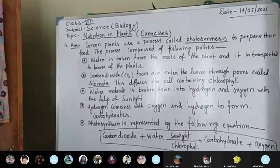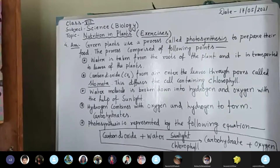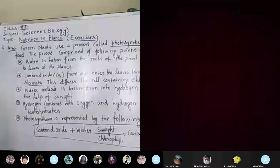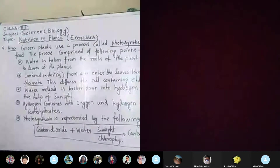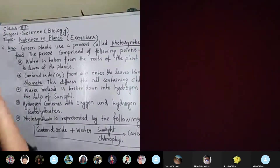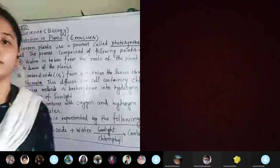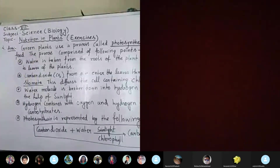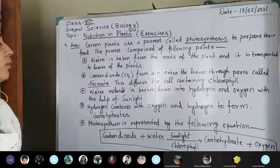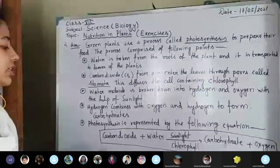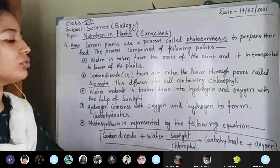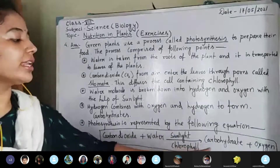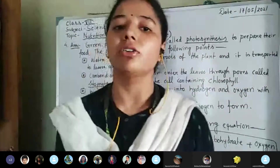The next point: the water molecule that is already taken by the plant is broken down into hydrogen and oxygen. As you know, the chemical formula of water is H2O, so water molecules will be broken down into hydrogen and oxygen in the presence of sunlight. Then hydrogen combines with CO2 to form carbohydrates. Photosynthesis is represented by: carbon dioxide plus water, in the presence of sunlight and chlorophyll, gives carbohydrates and releases oxygen.